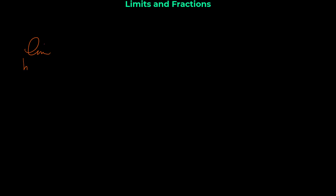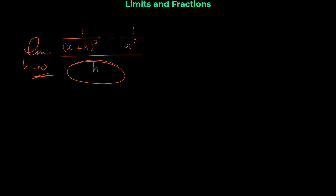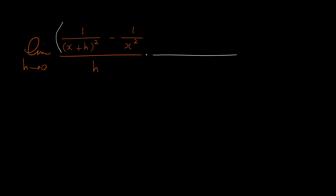Let me show you one more example. We want to find the limit as h approaches 0 of 1 over (x + h)² minus 1 over x², all over h. By direct substitution, plugging in 0 for h gives 0 in the denominator and also 0 in the numerator, so direct substitution doesn't work. We have to multiply the top and the bottom by the common denominator between these two fractions.